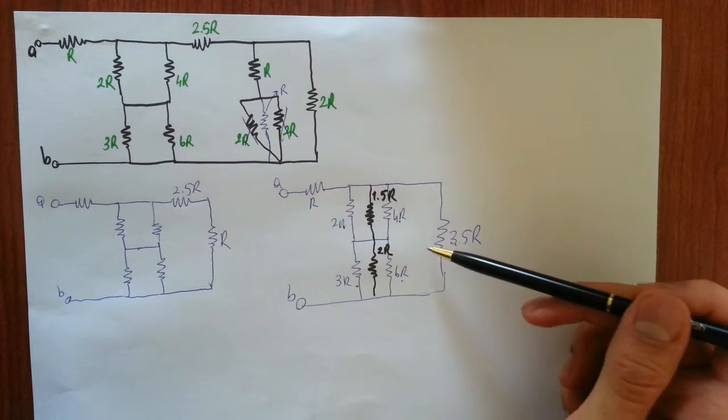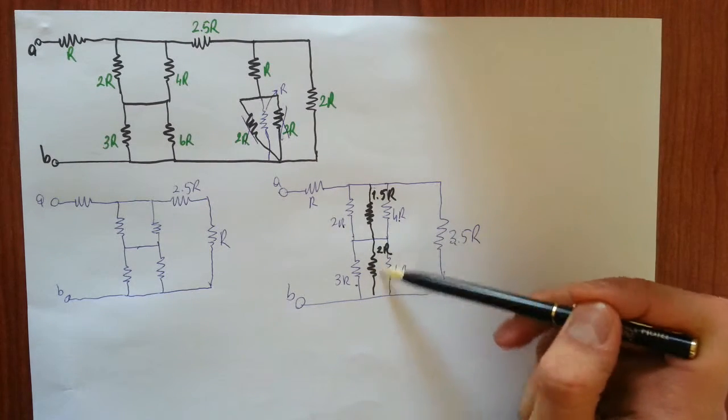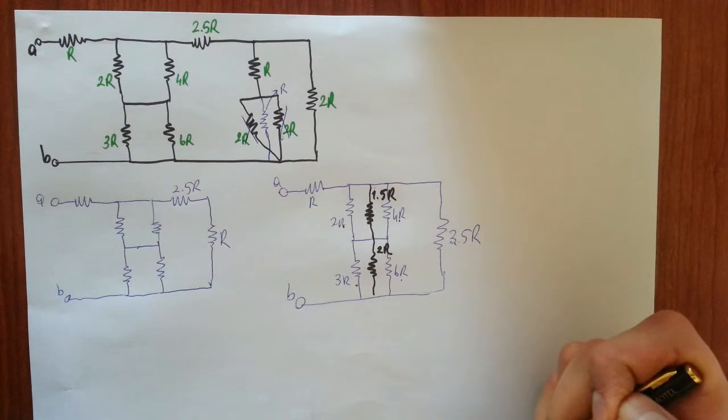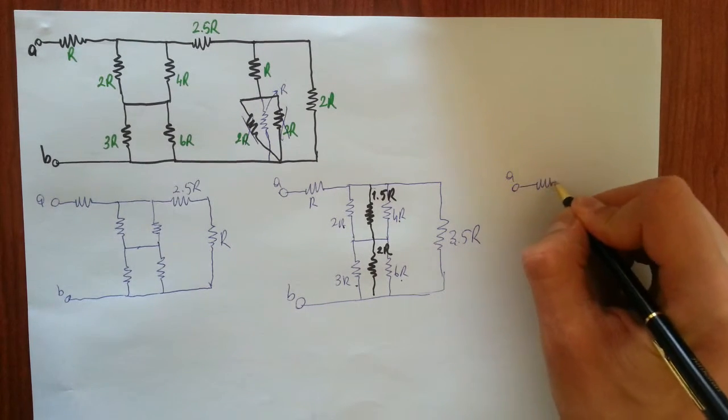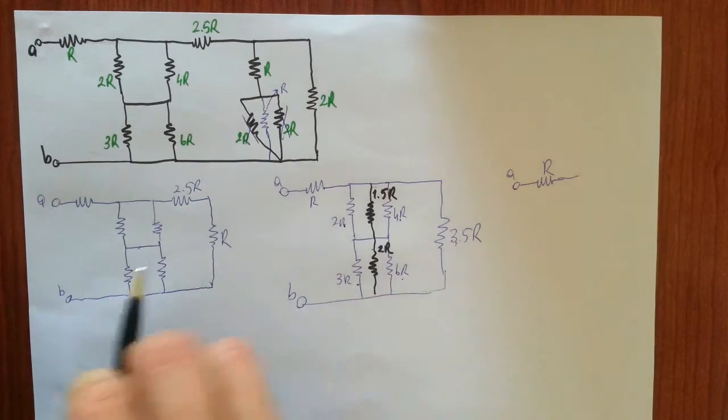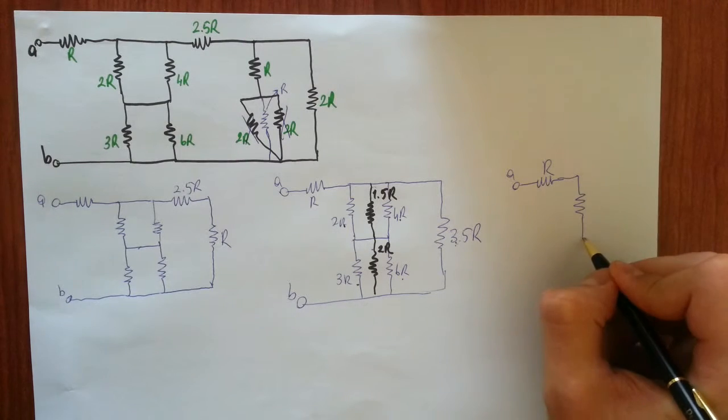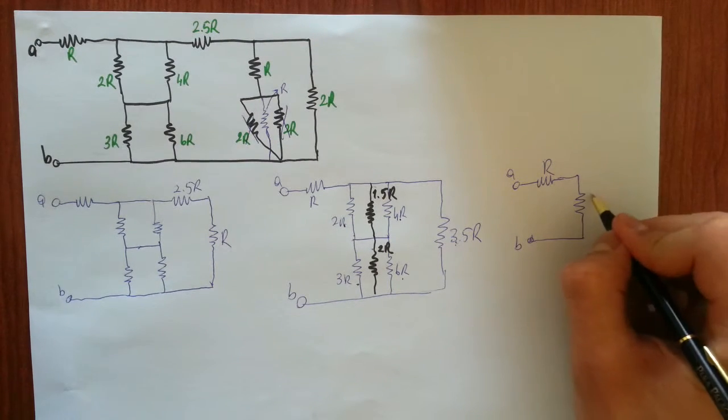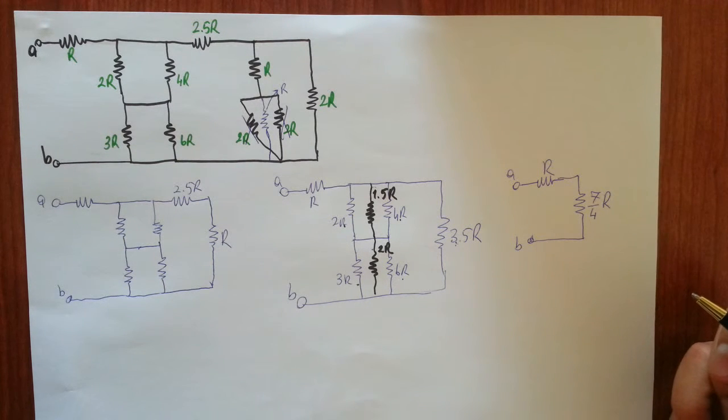One branch with 3.5R resistance. Let's reduce them. Terminal A, resistance R. 3.5R and 3.5R in parallel makes one single 7 over 4R resistor. Please do algebra if you are not with me right now, and you will see that it is 7 over 4R.